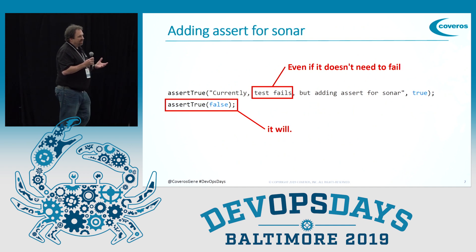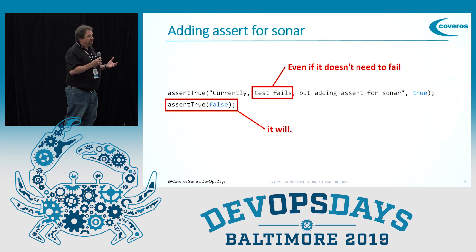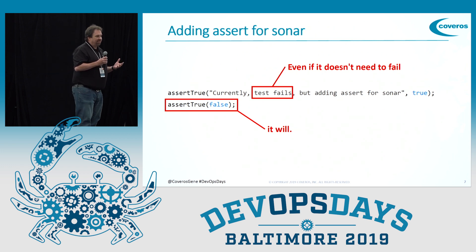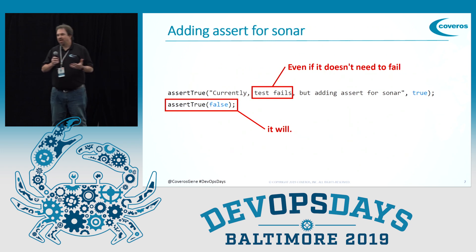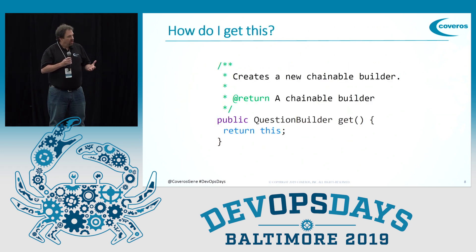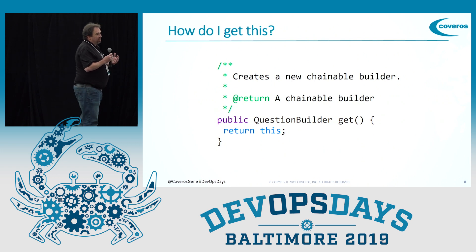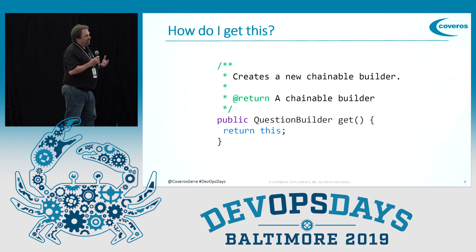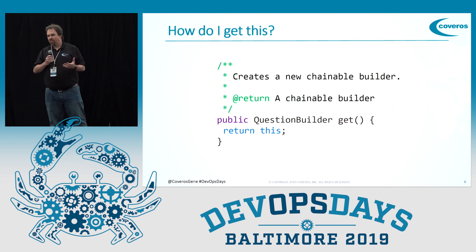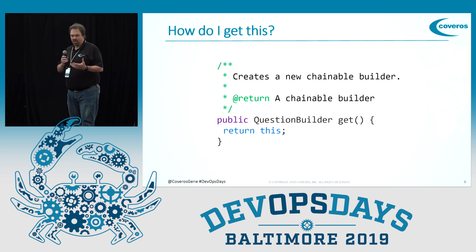Like adding an assert to satisfy SonarQube and then adding another assert that forces a failure rather than just fixing the test — so it will always fail even if they do fix it. Or this particular getter that will return a handle to the object, providing you have the object already so that you can call the getter.